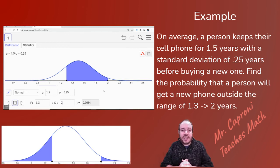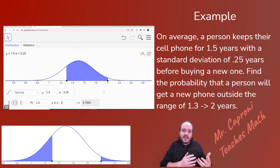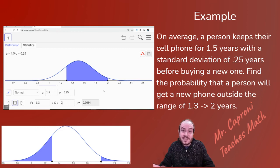So there's two different ways you can handle that last one because GeoGebra does not do both sides and outside. So you have to do it either this way of finding the middle and subtracting it from 1, or you have to just go ahead and find the left side, find the right side, and add them together. Either way, it's going to give you the same answer.